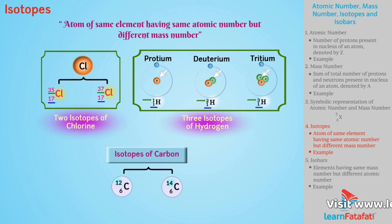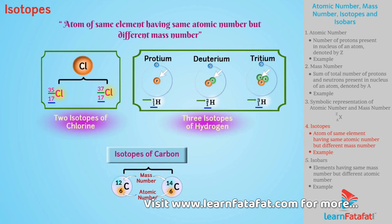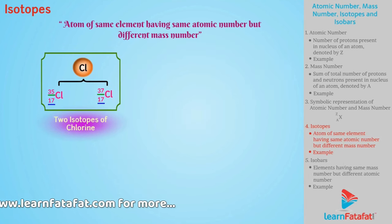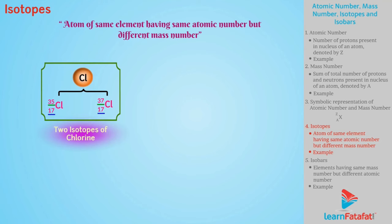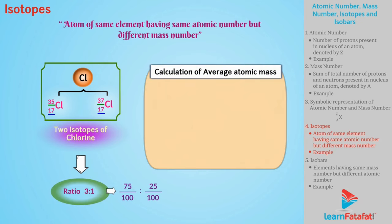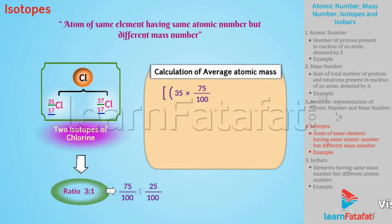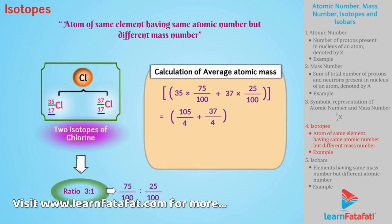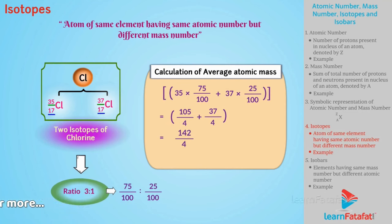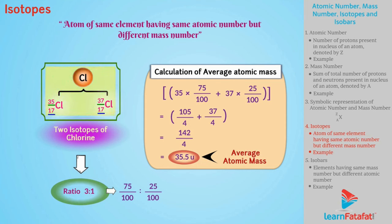It can be easily seen that the mass numbers of isotopes are different, whereas they have the same atomic number. If you take an amount of an element, isotopes of that element will be present in an appropriate ratio. In the case of chlorine, Cl-35 and Cl-37 occur in the ratio of 3:1. Hence, average atomic mass can be calculated as (35 × 75/100) + (37 × 25/100) = 105/4 + 37/4 = 142/4 = 35.5 units. This 35.5 represents the average atomic mass of Cl-35 and Cl-37.